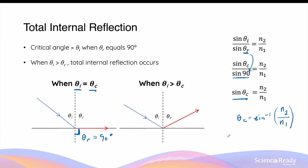This expression also explains why total internal reflection can only occur if n2 is less than n1. If n2 is greater than n1, then sine⁻¹ of a number greater than 1 is undefined. The value of n2 / n1 must be less than 1 in order to produce a result for the critical angle.